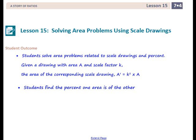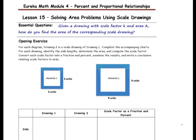Student Outcomes for this lesson: Students solve area problems related to scale drawings and percent. Given a drawing with area A and scale factor K, the area of the corresponding scale drawing, which is A prime, is equal to K squared times A. Students find the percent one area is of the other. The essential question: Given a drawing with scale factor K and area A, how do you find the area of the corresponding scale drawing?